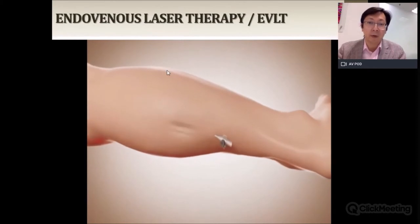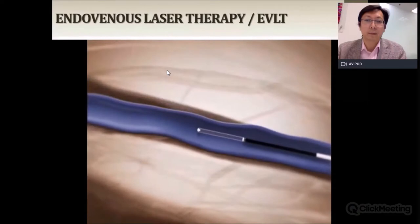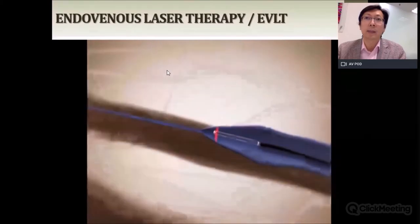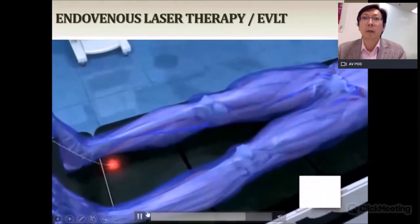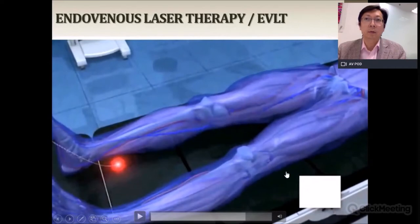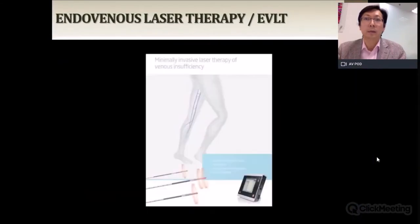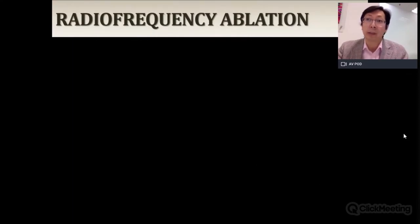This technique can also be performed for the short saphenous vein at the back of the leg using exactly the same approach, and the vein can be seen to seal almost immediately. The next technique is radiofrequency ablation, which is almost identical in technique — the only difference is that a radiofrequency fiber is used instead of a laser fiber.